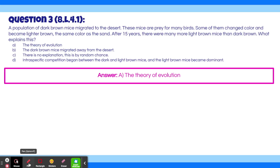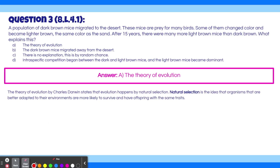The answer is A, the theory of evolution. The theory of evolution by Charles Darwin states that evolution happens by natural selection. Natural selection is the idea that organisms that are better adapted to their environments are more likely to survive and have offspring with the same traits. So let's look at how that applies to this example. We'll use yellow for light brown and orange for dark brown. At the beginning, before the 15 years, there were many dark brown mice.